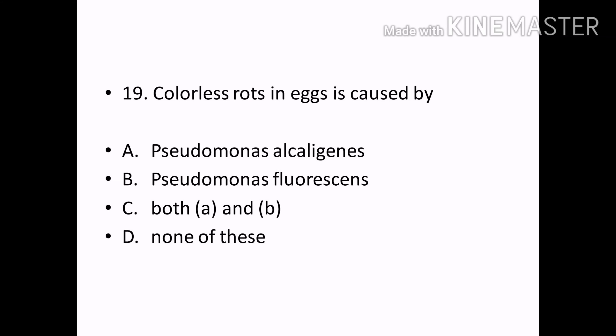Colorless rots in eggs is caused by: Options — Pseudomonas alkaligenes, Pseudomonas fluorescence, both A and B, none of these. Correct answer: Option A — Pseudomonas alkaligenes.